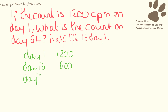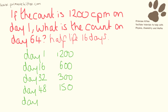Adding on another 16 days, we get to day 32. Half of 600 is 300. We need to add on another half-life, so we get to day 48. We half the 300, so we have a count of 150. Add on another half-life, that takes us to day 64, which is what we are looking for, and half of 150 is 75. So on day 64, the count is 75 counts per minute.